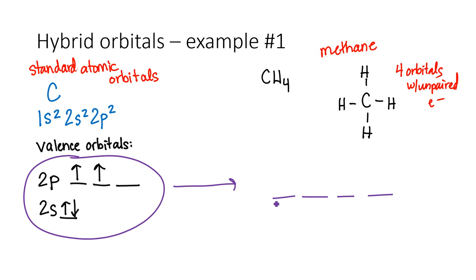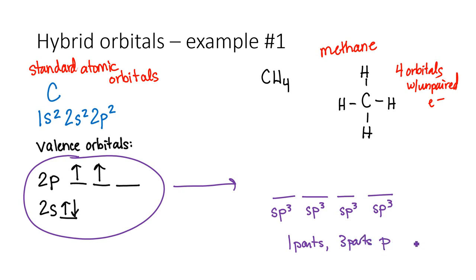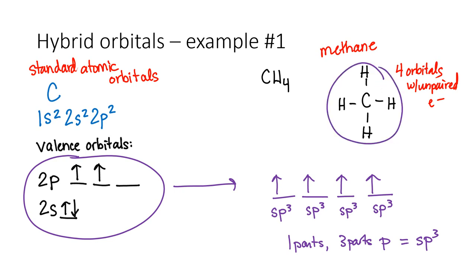One, two, three, four — notice I drew them all in the same line because these orbitals are all equal to each other. Over here the p orbitals are a little higher energy than the s, but now we've made four orbitals that are all equal. They are made by combining one s and three p orbitals, so we can think of them as one part s, three parts p. We call them sp3 orbitals. Since we have four electrons divided amongst four orbitals of equal energy, by Hund's rule the electrons go one in each orbital before pairing up — so now we've got four orbitals with unpaired electrons, which explains how carbon can form four bonds.